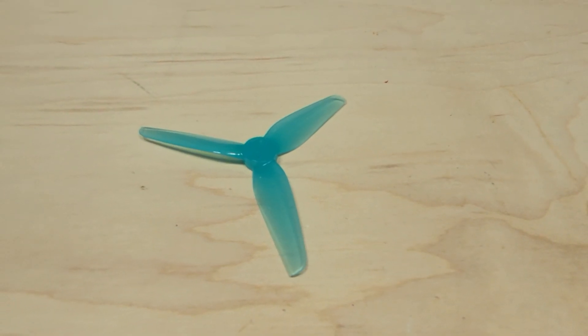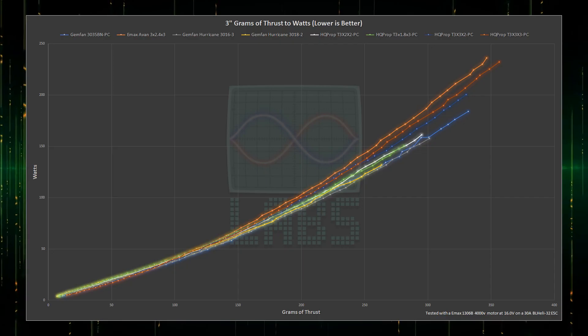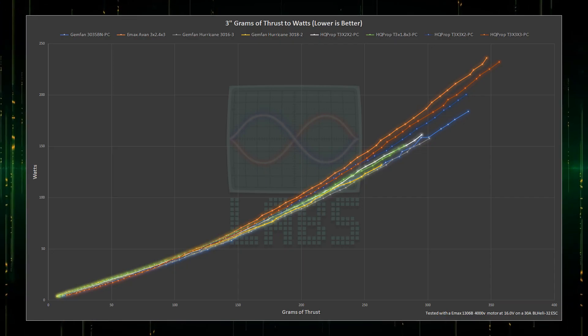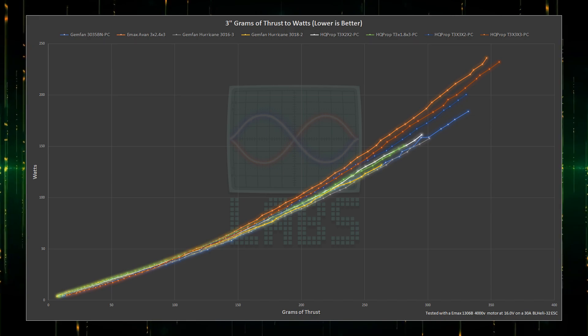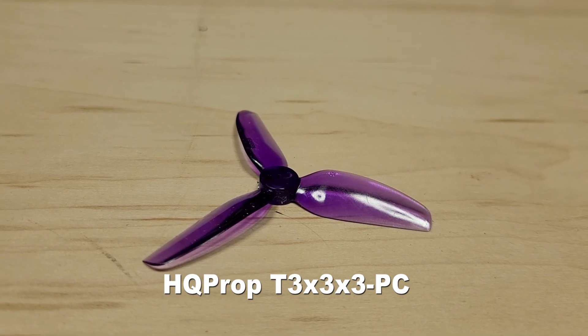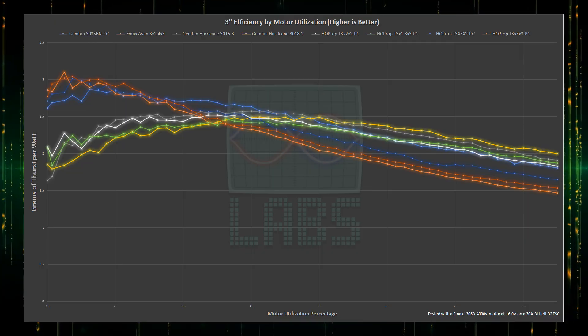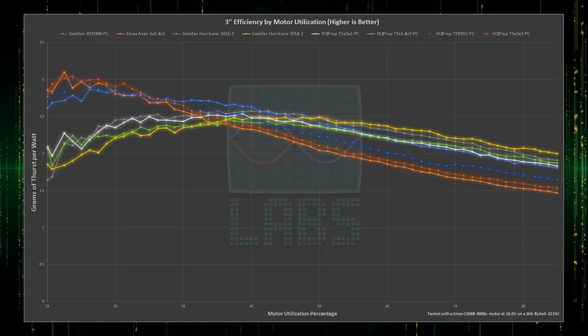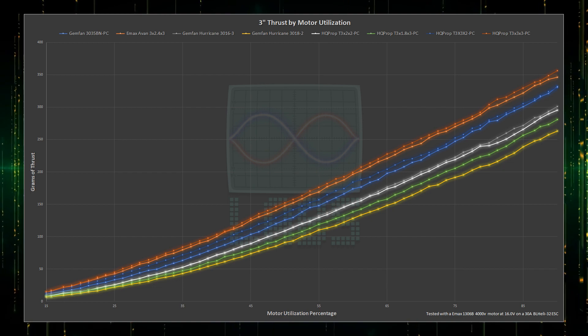So I've pointed out some clear losers but who is the winner? Based on the data there are two that stand out in different categories based on build and flight requirements. The HQ prop 3-blade 3-inch pitch propeller stands out as the winner for overall performance. It has the best low-end efficiency which is very important and can deliver the greatest punch when needed assuming your battery can keep up.